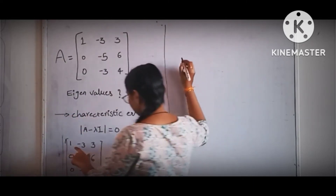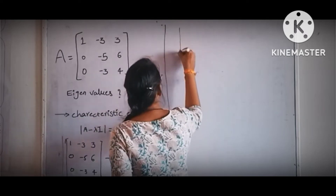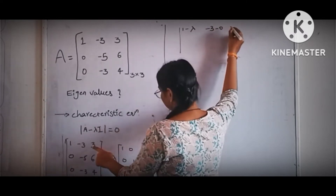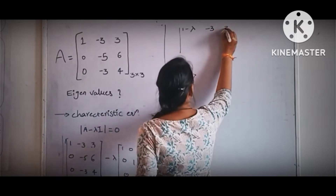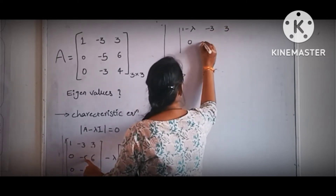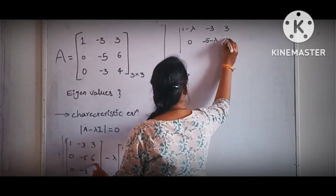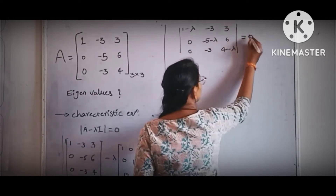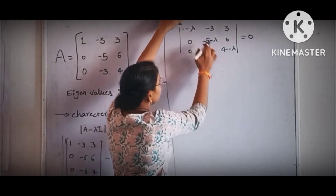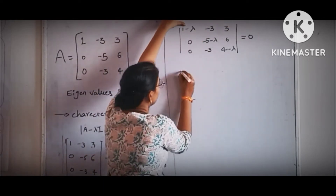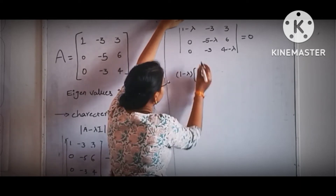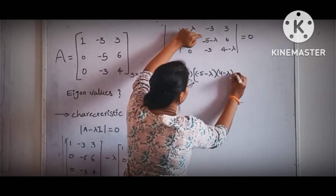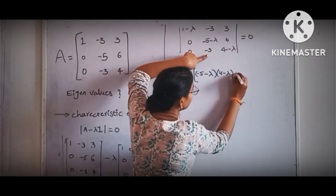Now I am simplifying this equation. So here we get 1 minus lambda, minus 3, 3 on the first row. The remaining submatrix is 0, -5 minus lambda, 6, 0, -3, 4 minus lambda, equal to 0. For finding the determinant we close the particular column and row. So 1 minus lambda times the quantity: minus 5 minus lambda times 4 minus lambda, minus 6 times 3, which gives plus 18.